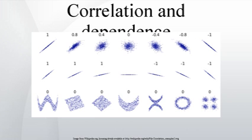However, this view has little mathematical basis, as rank correlation coefficients measure a different type of relationship than the Pearson product moment correlation coefficient, and are best seen as measures of a different type of association rather than as alternative measures of the population correlation coefficient. To illustrate the nature of rank correlation and its difference from linear correlation, consider four pairs of numbers (x, y). As we go from each pair to the next, x increases and so does y — this relationship is perfect, in the sense that an increase in x is always accompanied by an increase in y. This means we have a perfect rank correlation, and both Spearman's and Kendall's correlation coefficients are 1, whereas in this example the Pearson product moment correlation coefficient is 0.7544, indicating that the points are far from lying on a straight line.